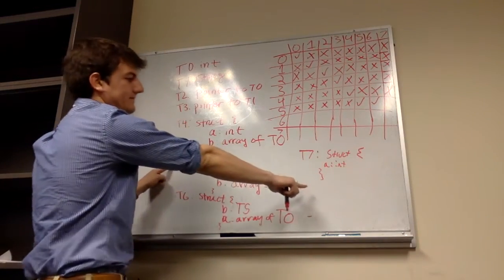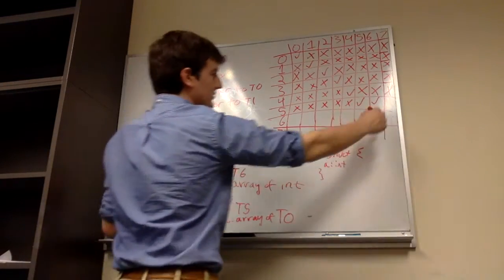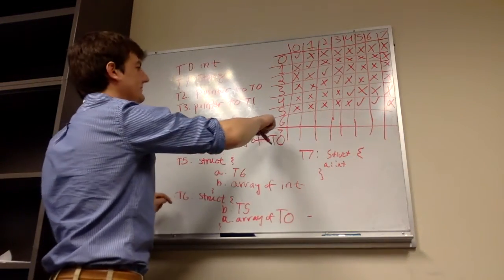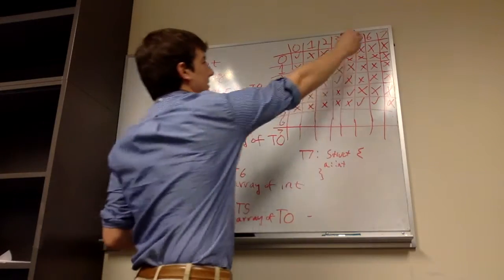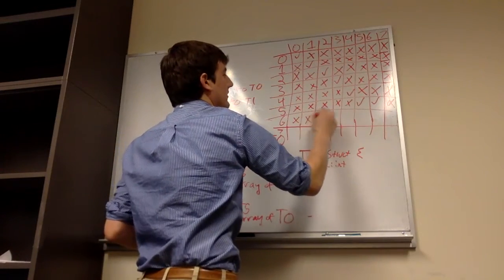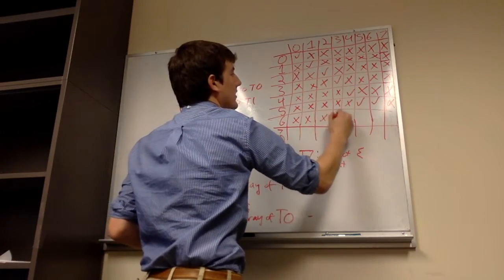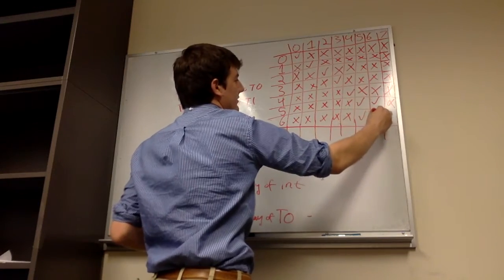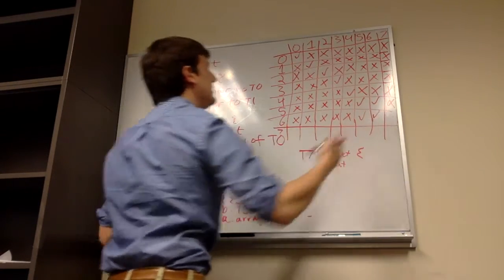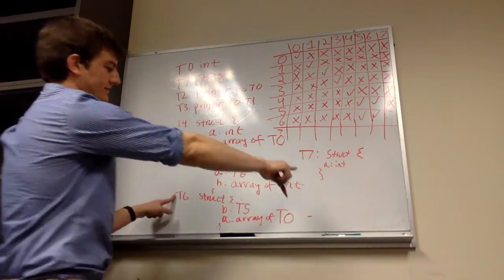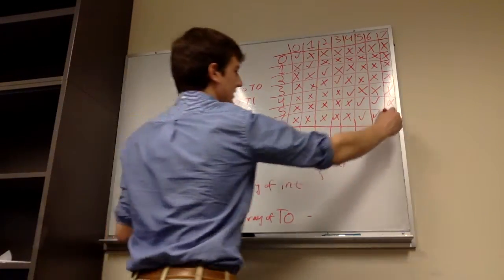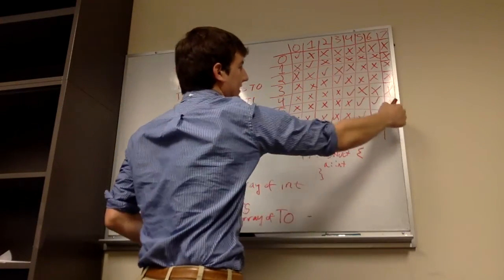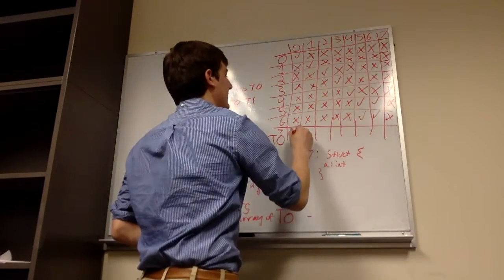T5 and T7: different number of fields — no. T6 we can copy from T5: check mark for T5, check mark for T6. T6 and T7: nope. And T7 we've already calculated — all no's.